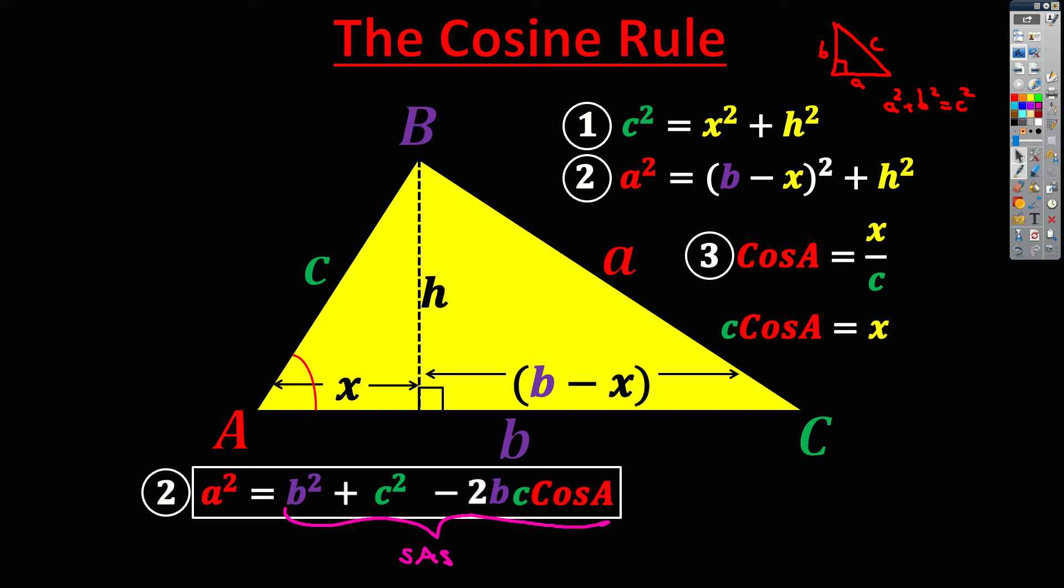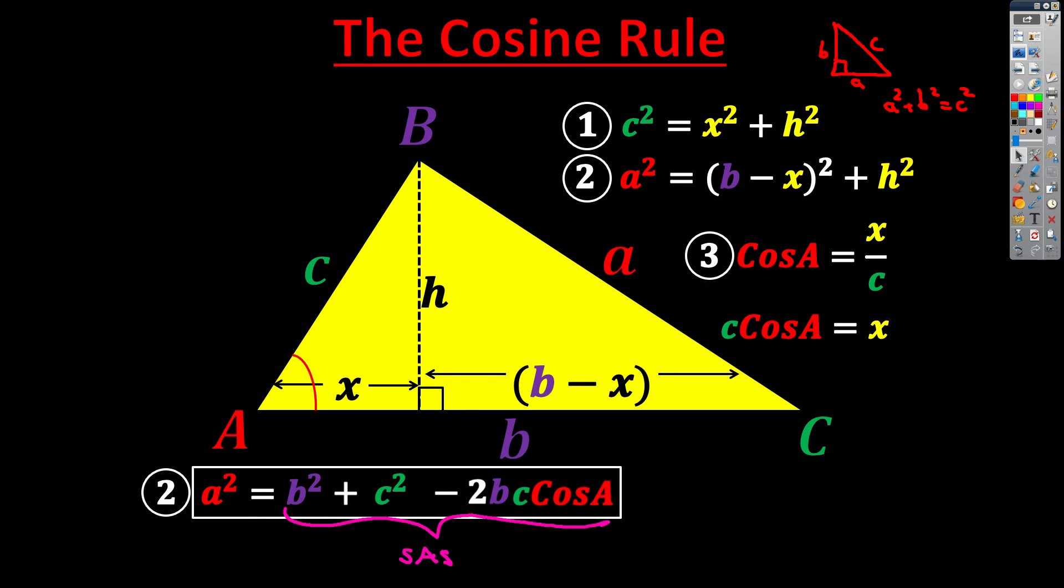So that's the cosine rule proved. And if you want to have a go at proving it by changing the direction of this perpendicular drop, then you can do so. But it's not absolutely necessary. Thanks, see you soon.